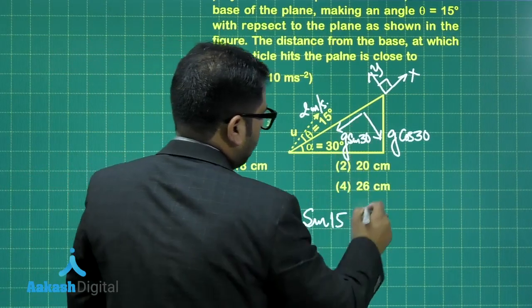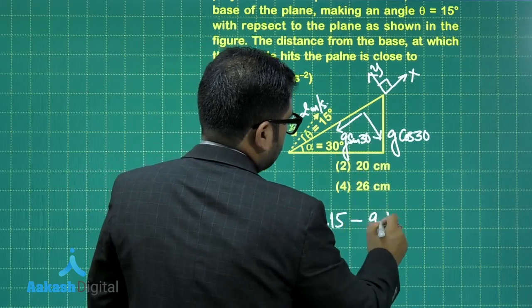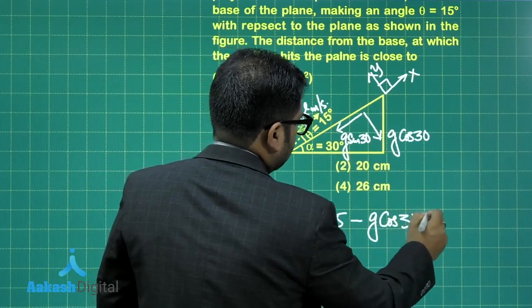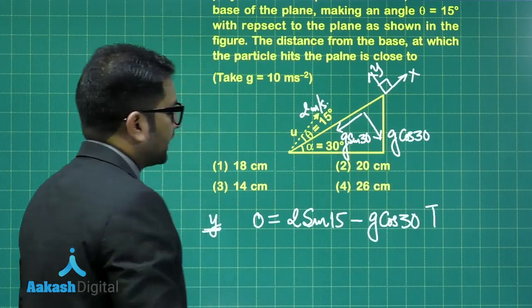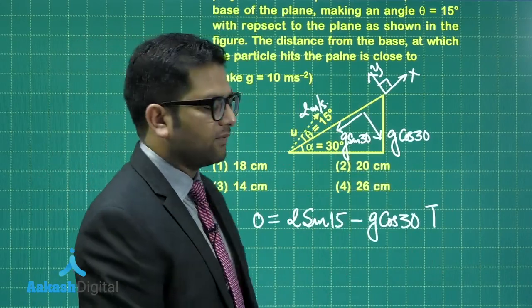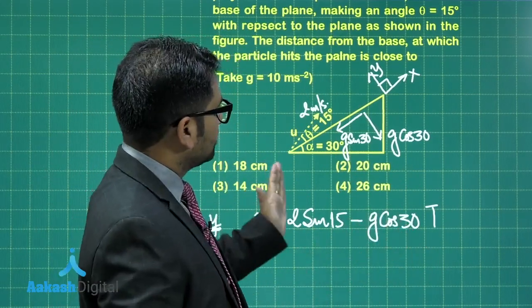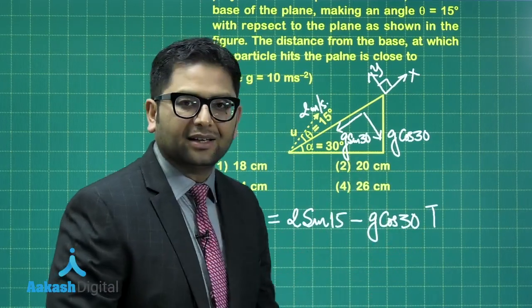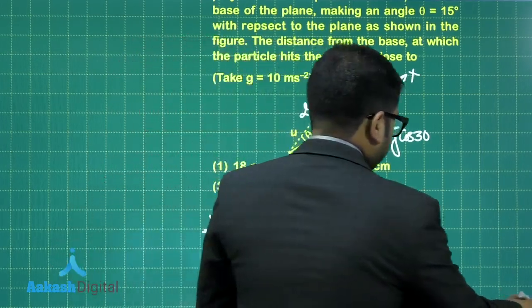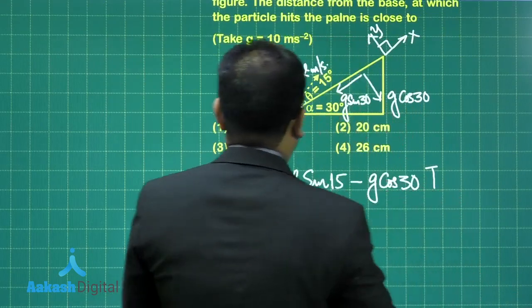Y acceleration is g cos 30 multiplied by capital T. Let me call capital T the time of flight. Nothing special, v equals u plus at. Once you get this, now let's calculate the range.